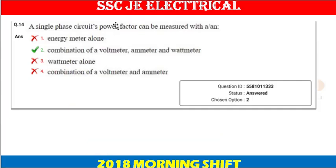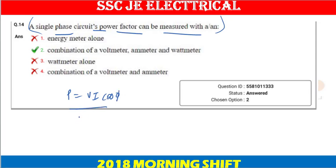Next question: in single phase circuits, power factor can be measured how? Logically, we need to find cos phi. For a single phase circuit, P equals VI cos phi. Power is measured by a watt meter, voltage by a volt meter, and current by an ammeter. Using these three instruments, cos phi can be calculated.